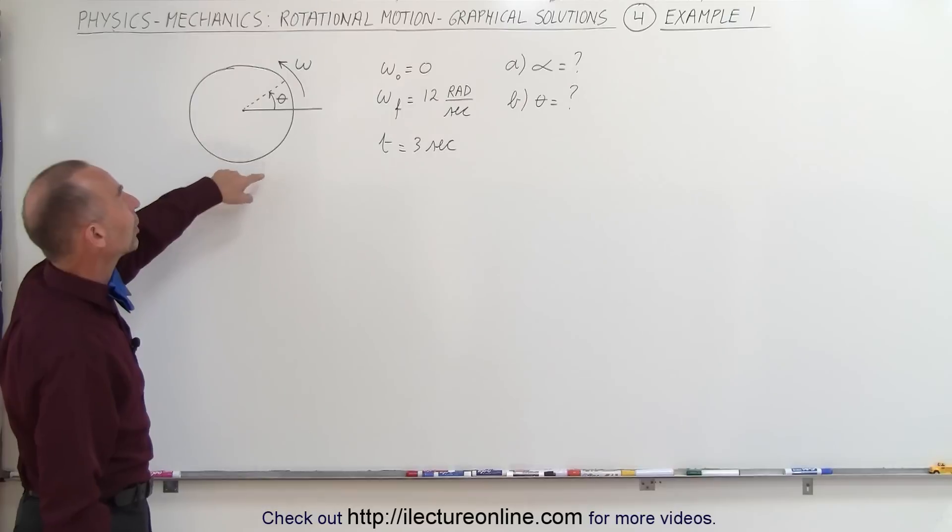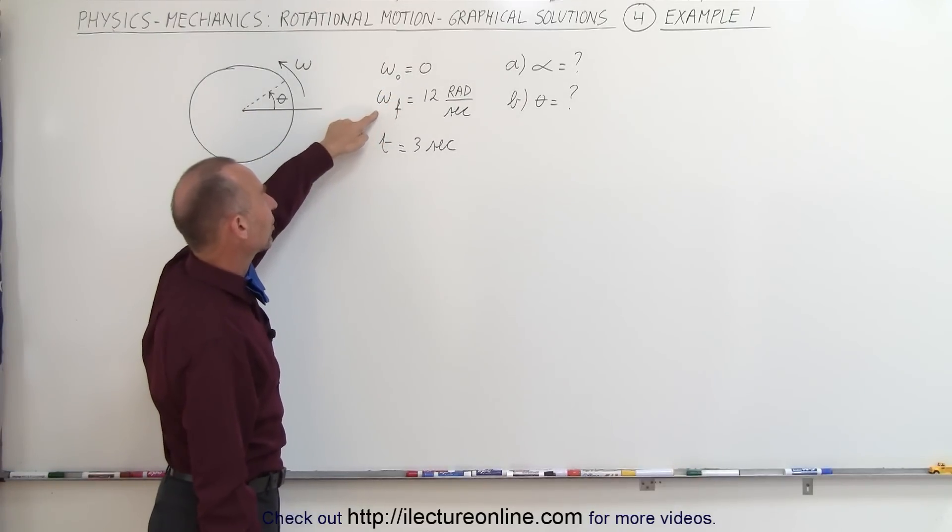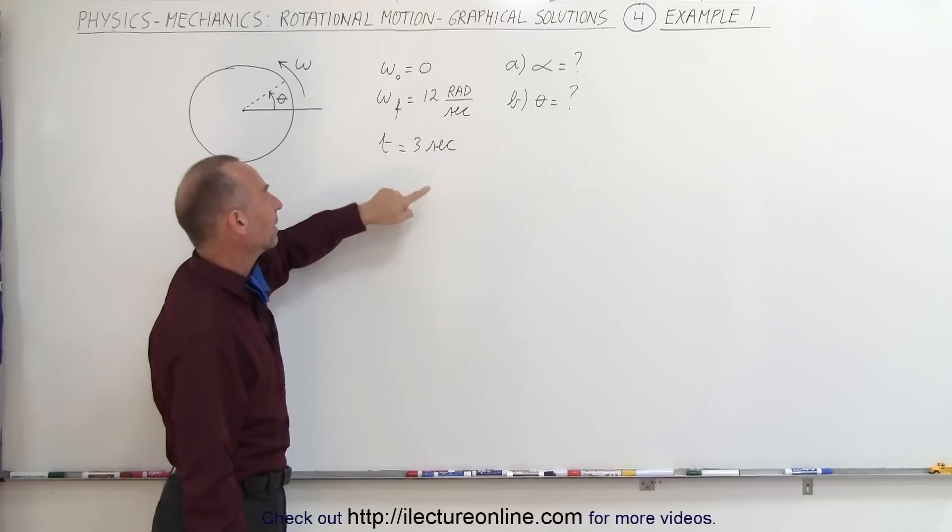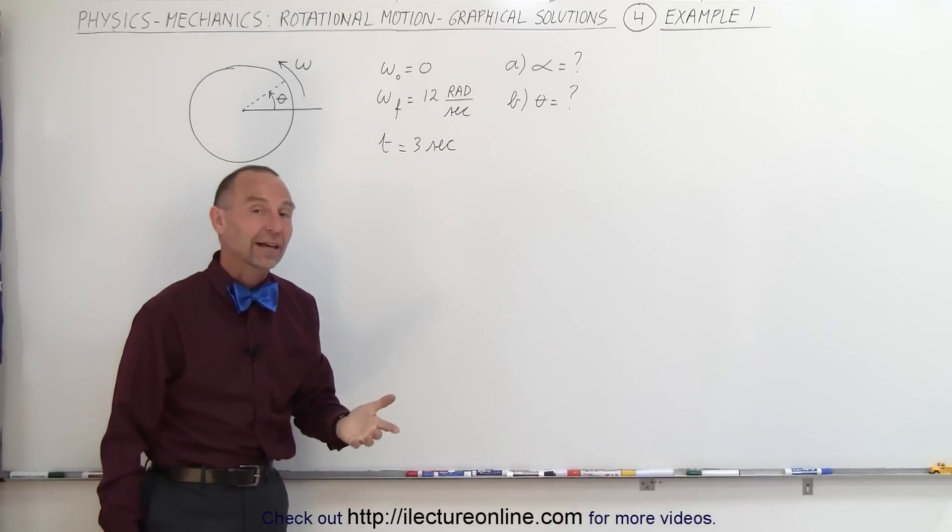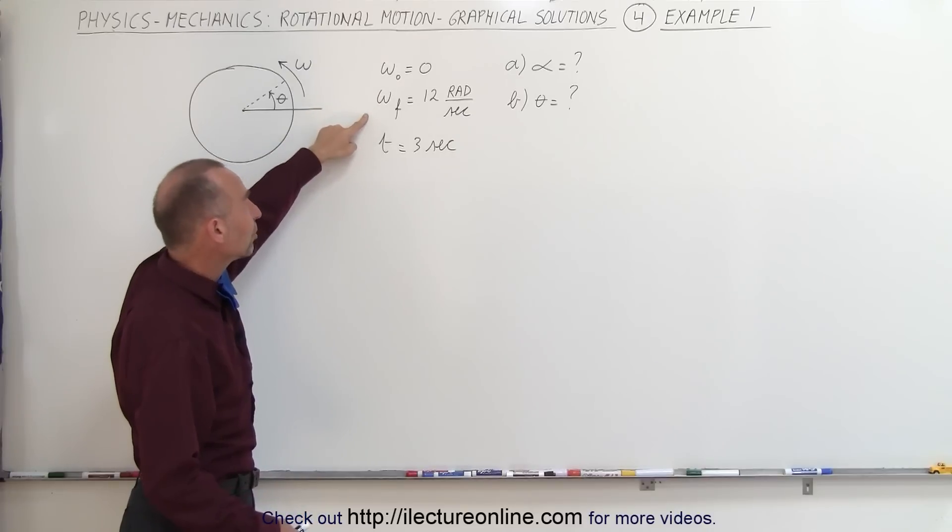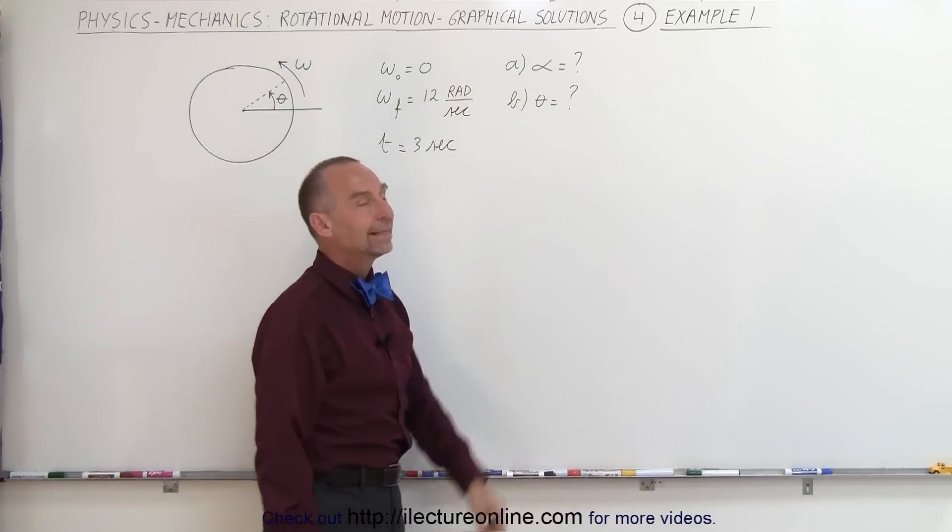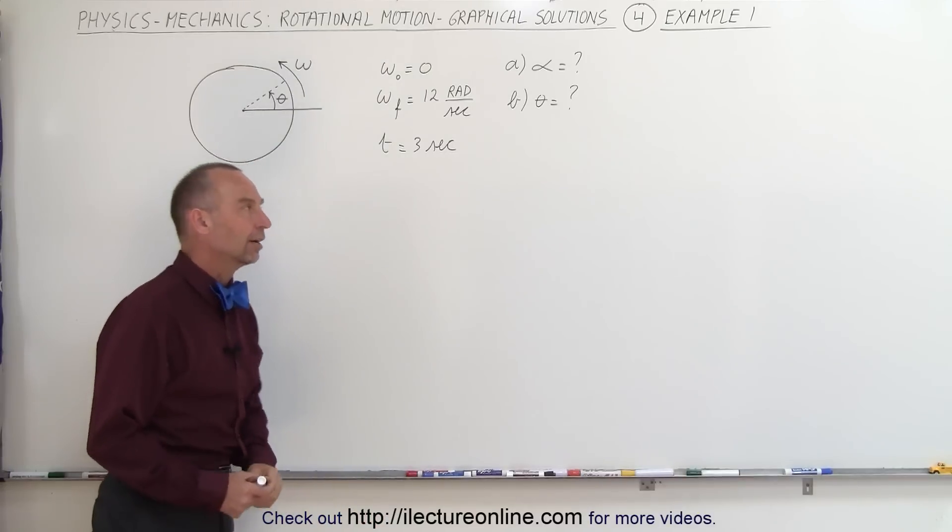Here we have an example where the initial angular velocity is zero, the final angular velocity is 12 radians per second, and the elapsed time is three seconds. So in three seconds the object goes from zero radians per second to 12 radians per second and we're supposed to find the angular acceleration and the angular distance covered.